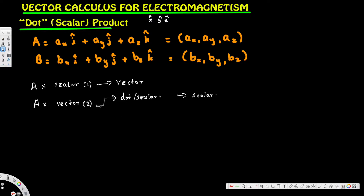There is another way to multiply a vector function with a vector function called cross product, or vector product, and that results in a vector.